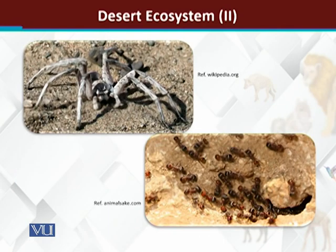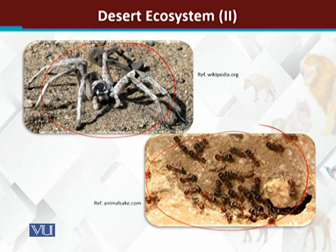Here we have a few animals in pictorial view. The first one is the desert spider. In deserts there are a number of species of ants also present. We have a rich diversity of arthropods. The reason is that arthropods are very resistant — they have the ability to survive a long time without water. We also have a number of species of spiders and scorpions.